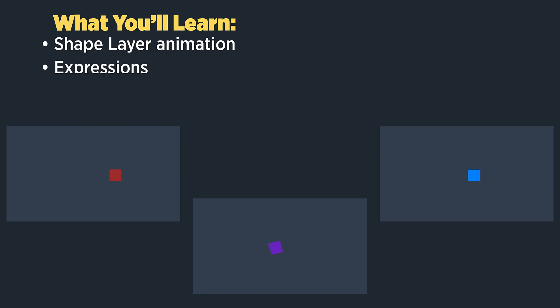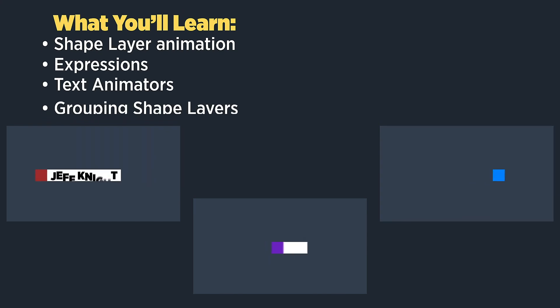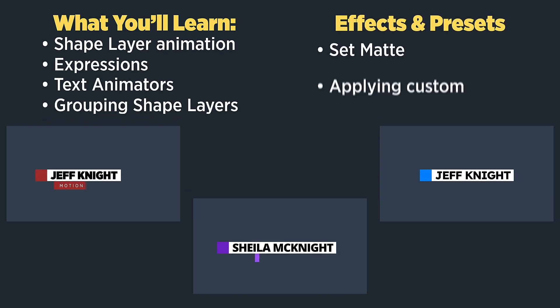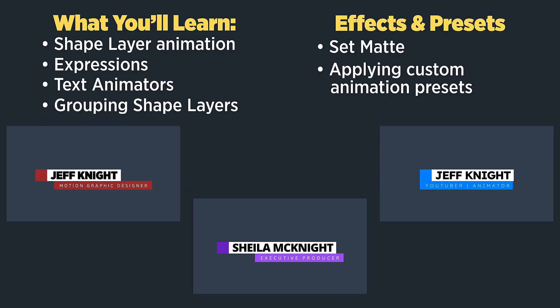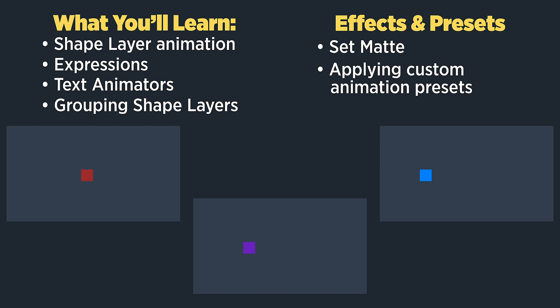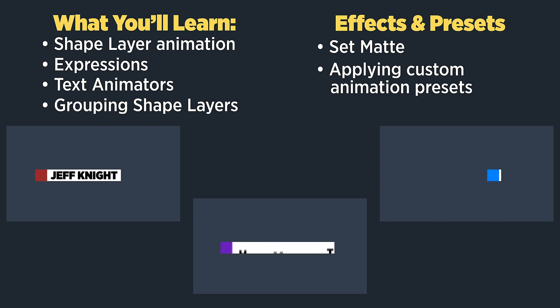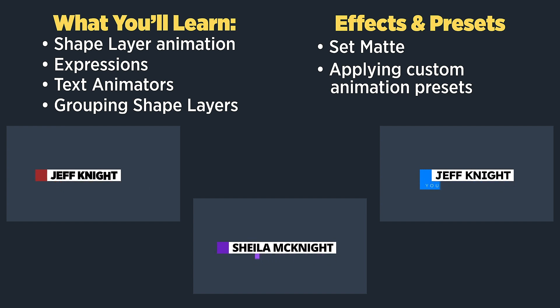This tutorial is part two in our three-part series. In the previous tutorial, we created our name bar using expressions, text animators, set matte, and shape layers. If you haven't checked out that tutorial, I highly recommend that you do that before watching this one, as we'll be building on what we learned last time. In this tutorial, we'll be creating our title bar.